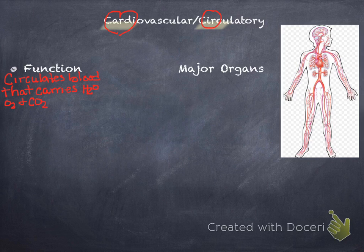Now let's talk about the function. Its job is to circulate blood that carries H2O, which is water, O2, which is oxygen, and CO2. It also carries nutrients and liquid waste and hormones. These are things being carried in the blood that belong to other systems. Nutrients belong to the digestive system, hormones belong to the endocrine system, liquid waste to the kidneys, so the urinary system.